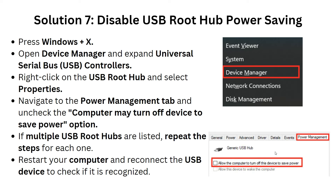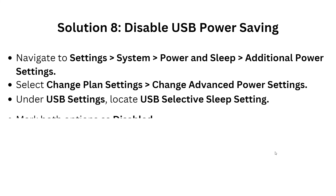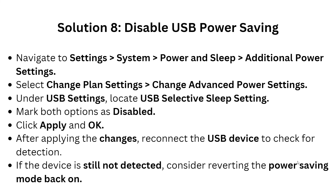Solution 8 is to disable USB power saving. Navigate to Settings, then System and Power, and then Additional Power Settings. Select Change Plan Settings and Change Advanced Power Settings. Under USB Settings, locate USB Selective Suspend Setting and mark both options as Disabled. Click Apply and OK. After applying the changes, reconnect the USB device to check detection. If the device is still not detected, consider reverting the power saving mode back on.